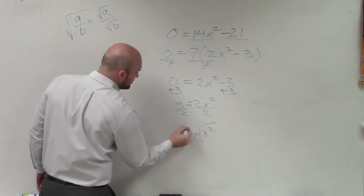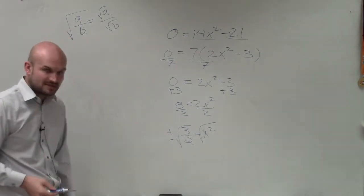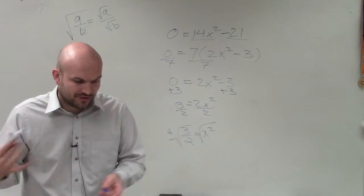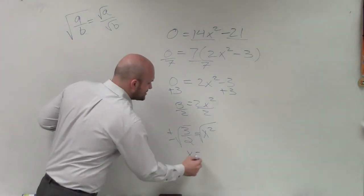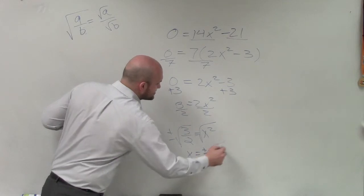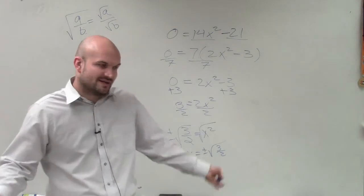So I'm going to introduce the square root on both sides. And whenever I introduce the square root on both sides, I have to make sure I introduce the plus and the minus, the positive and the negative value of that number. Now, a lot of times for your class, you might just need to approximate that. So you'd plug in ±√3/√2 and leave it at that.